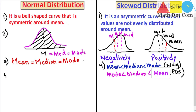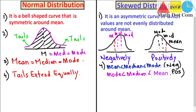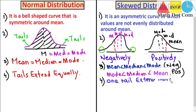Another difference is in the tails of the distribution. In normal distribution, the tails extend equally. While in skewed distribution, it is clear from the diagrams that the tails are not extended equally — one tail extends more than the other, in both negative and positive skewed distributions.